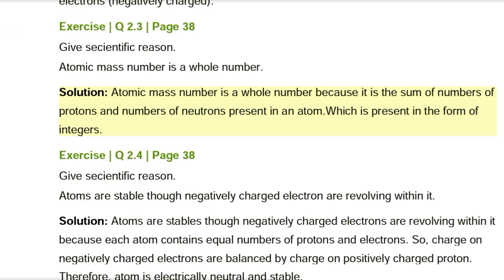Exercise Q2.3, page 38. Give scientific reason: Atomic mass number is a whole number. Solution: Atomic mass number is a whole number because it is the sum of the numbers of protons and neutrons present in an atom, which are present in the form of integers.